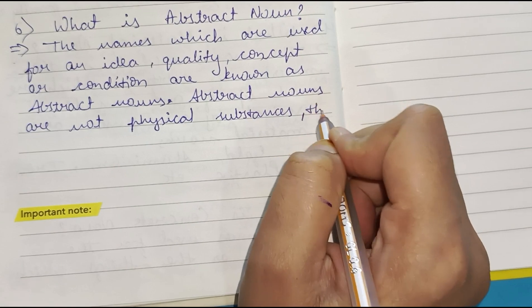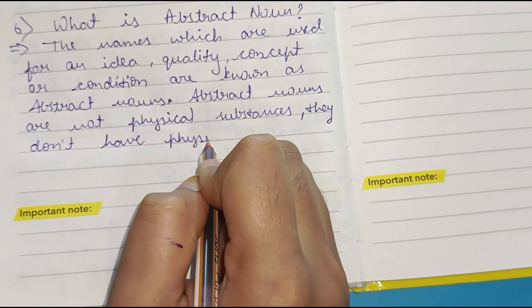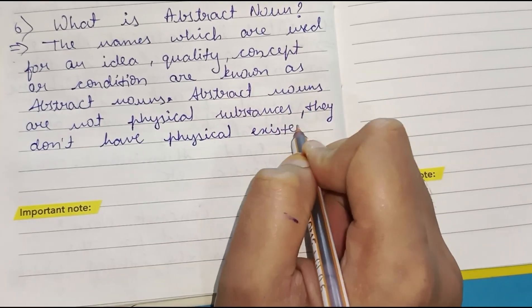Abstract nouns are not physical substances. They don't have physical existence.